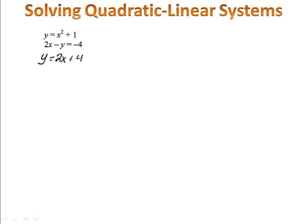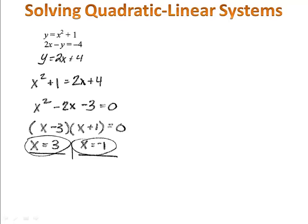Now we can set the two equations equal to each other and solve. I'd like for you to take a few moments to solve the system right now. Please pause the video here and come back once you're finished. Let's see how you did. We combine the equations so we have x² + 1 = 2x + 4.